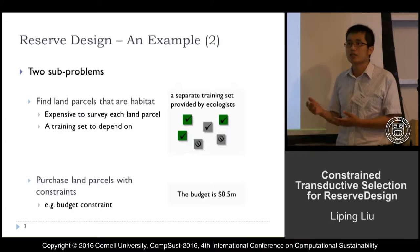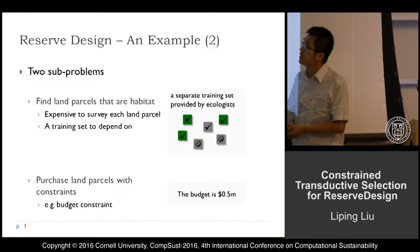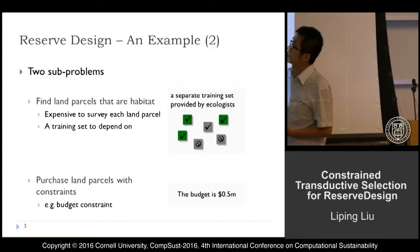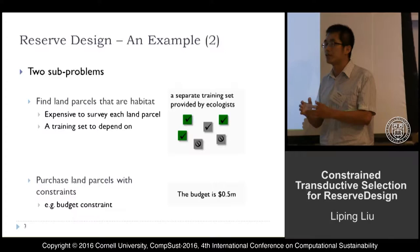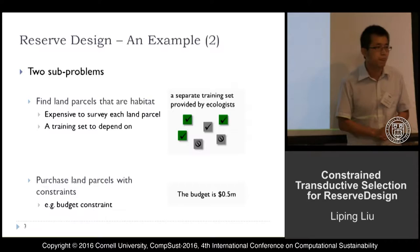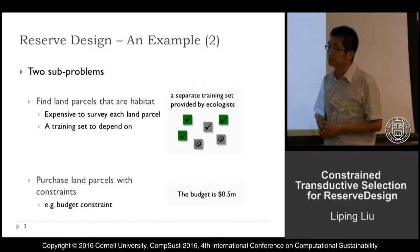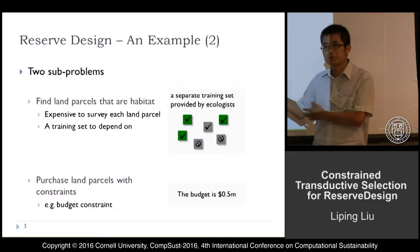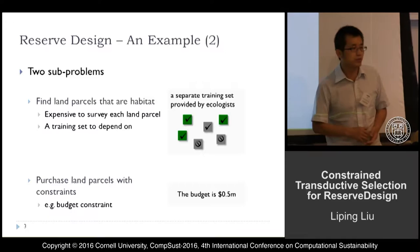But it's often expensive to survey each land parcel to get its label. Instead, we often have a training set to depend on. Suppose ecologists can provide us a training set — land parcels from a separate planning area that are surveyed. For our land parcels, we have feature vectors to describe them. The second sub-problem is to make a purchase decision. Often we will have constraints, such as a budget constraint, so we have to make the purchase decision subject to such constraints.